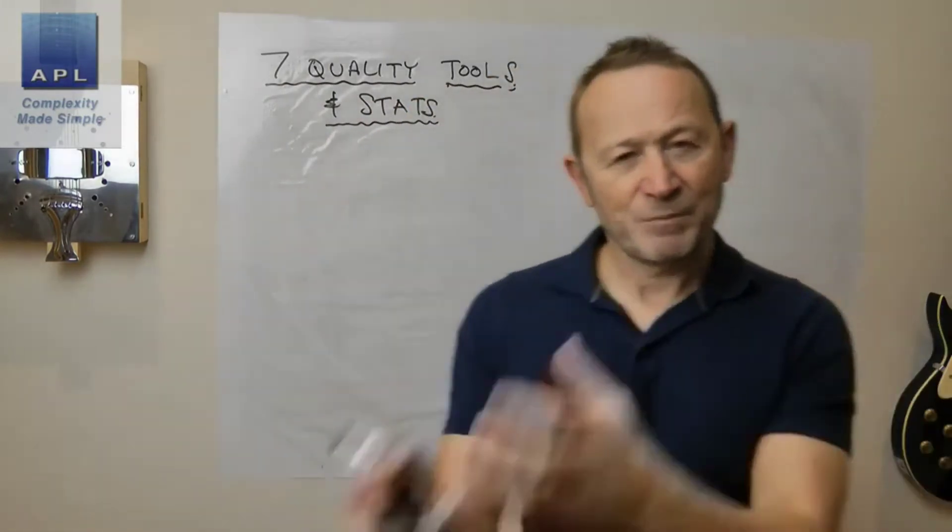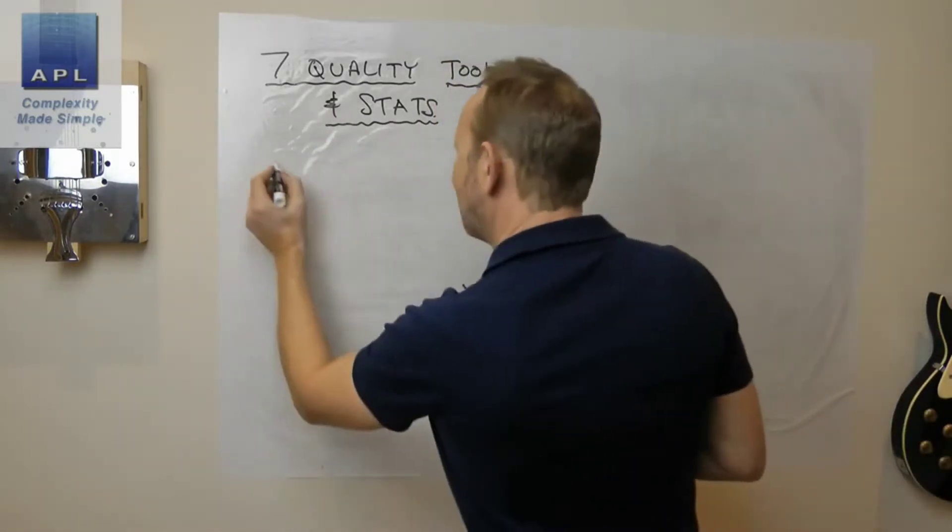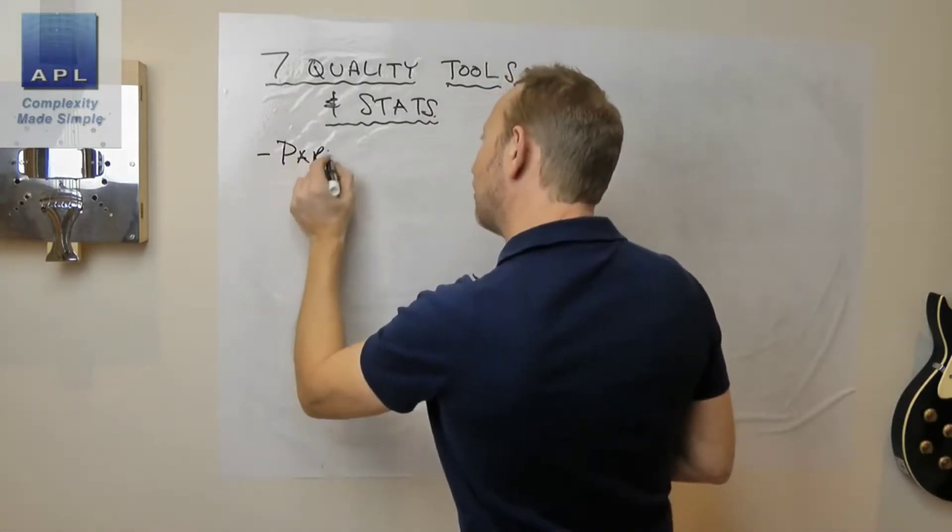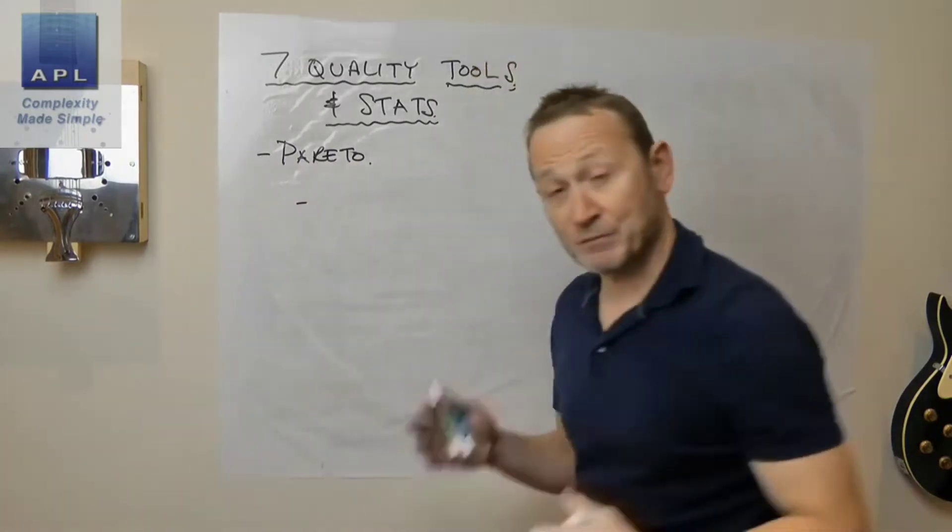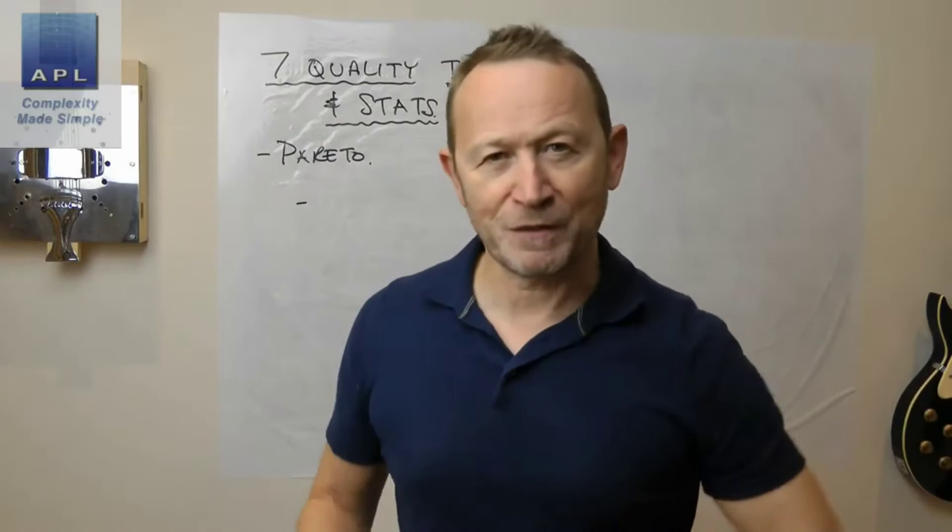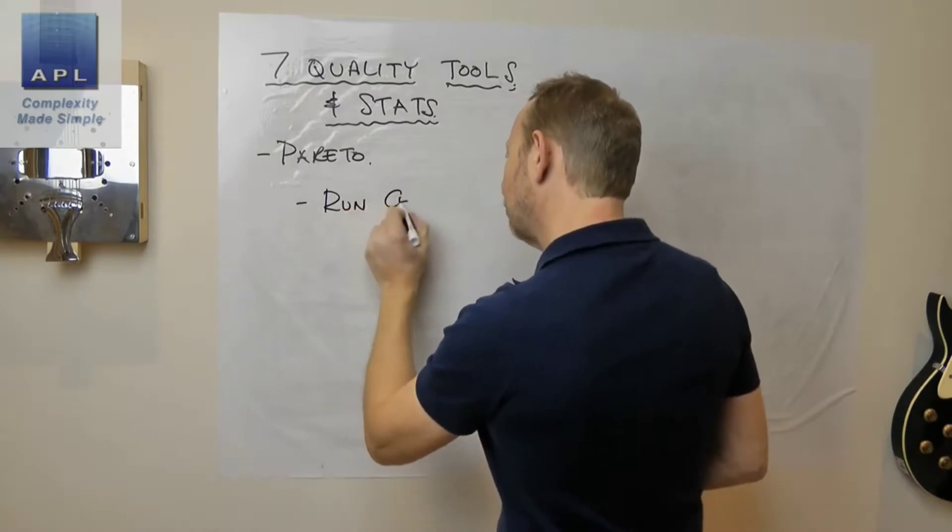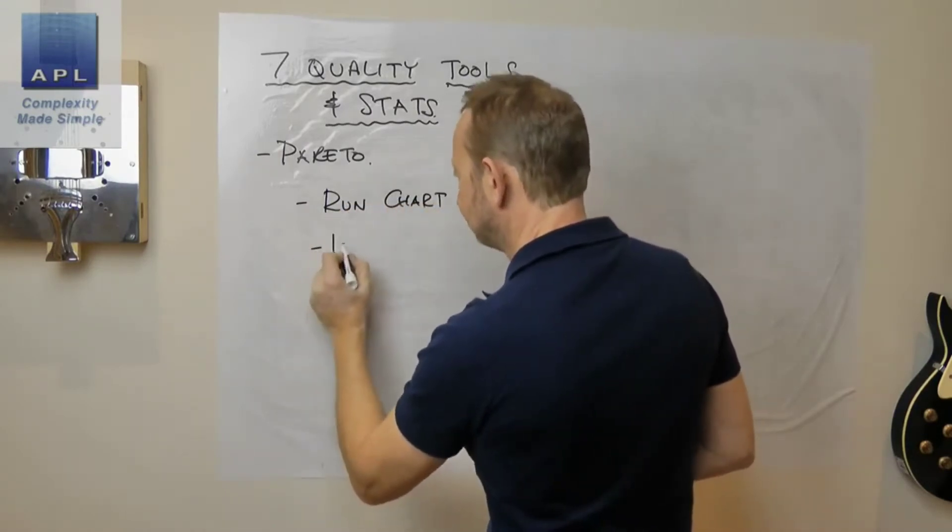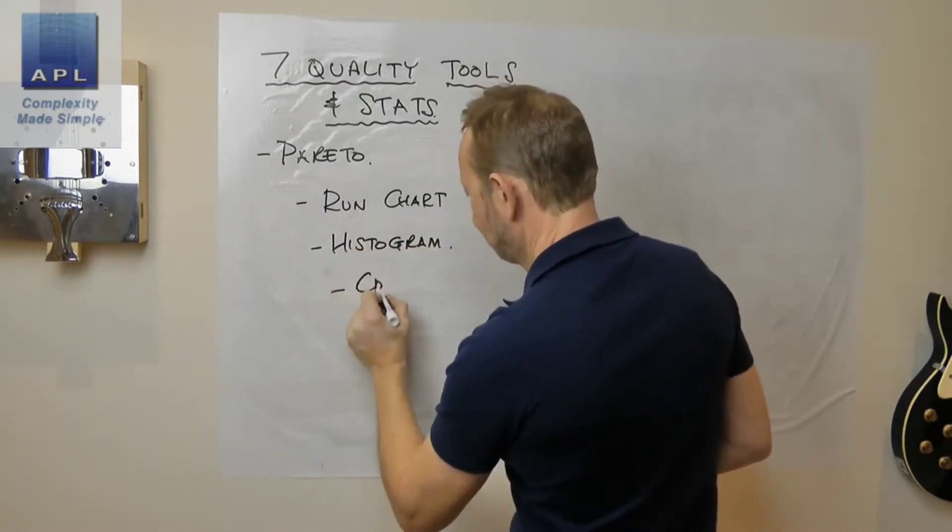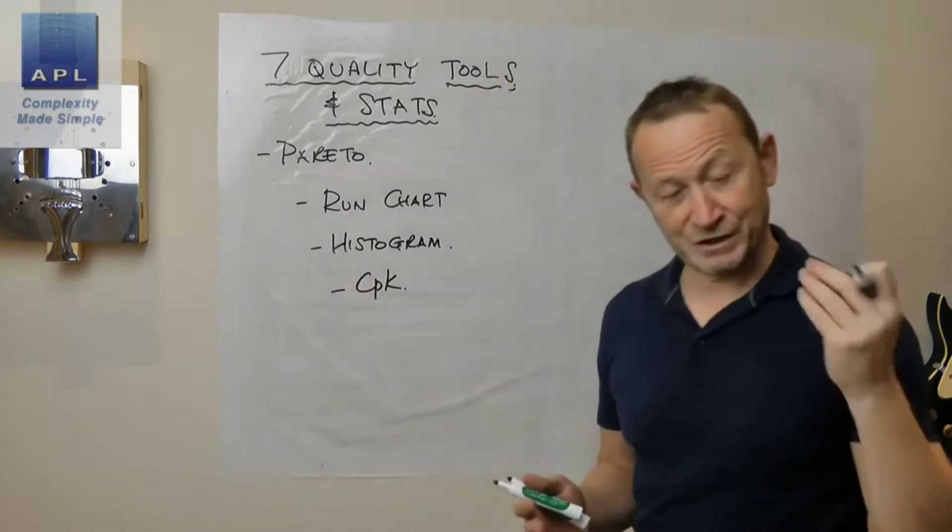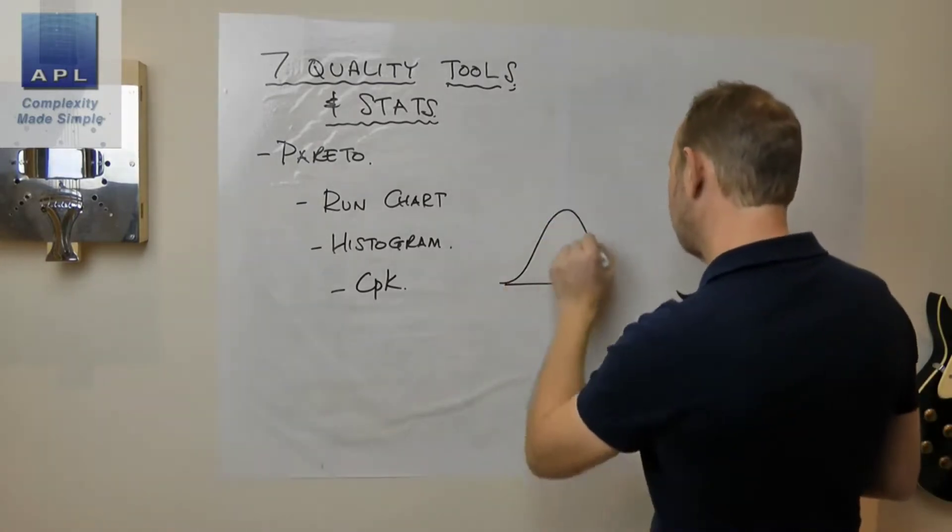So we've got the seven quality tools and the stats that's in there. In a previous video, I showed you the seven quality tools in the order that I typically use them. I said at the beginning I would typically start off with a Pareto. This would be the one that I use to find the problem in the first place. Then once I've got the problem, I typically go: Run Chart, Histogram, CPK.